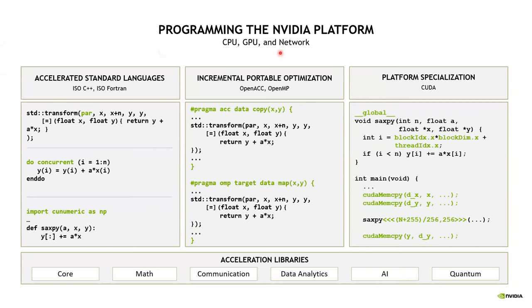First, through the acquisition of Mellanox, providing us with an InfiniBand network portion of the company. That happened a little over a year and a half ago. And then last year, Jensen, our CEO, announced the Grace CPU that is coming in the future. At an unannounced time in the future, we will have an ARM-based CPU as well. So we need to provide you with a coherent vision for how to program for all of this — not just the GPU, but also the CPU and also the network.